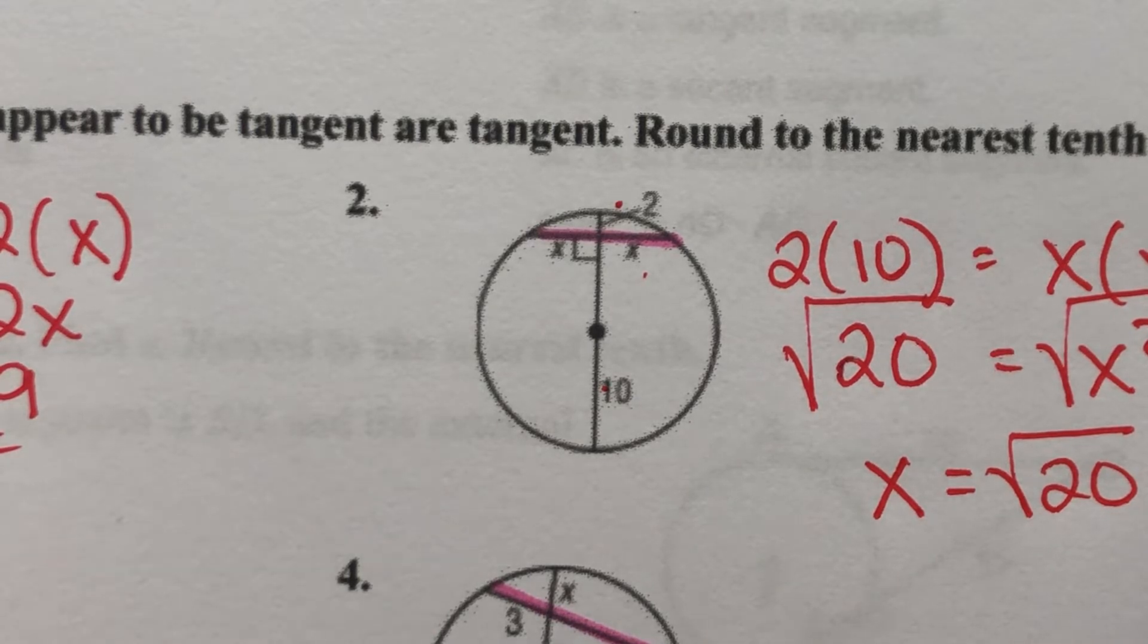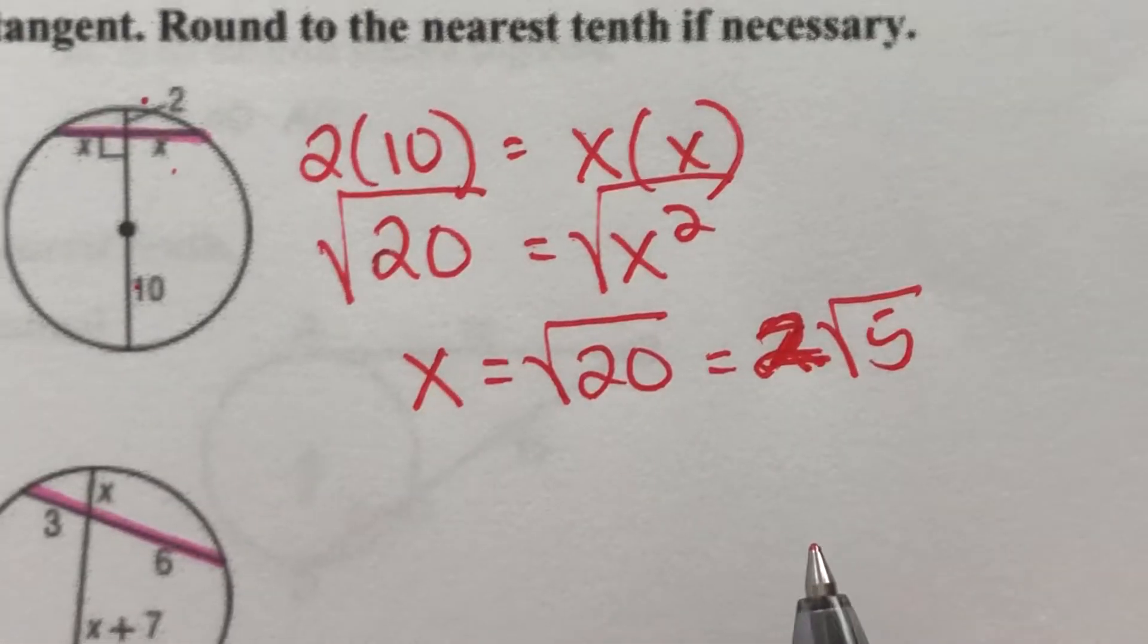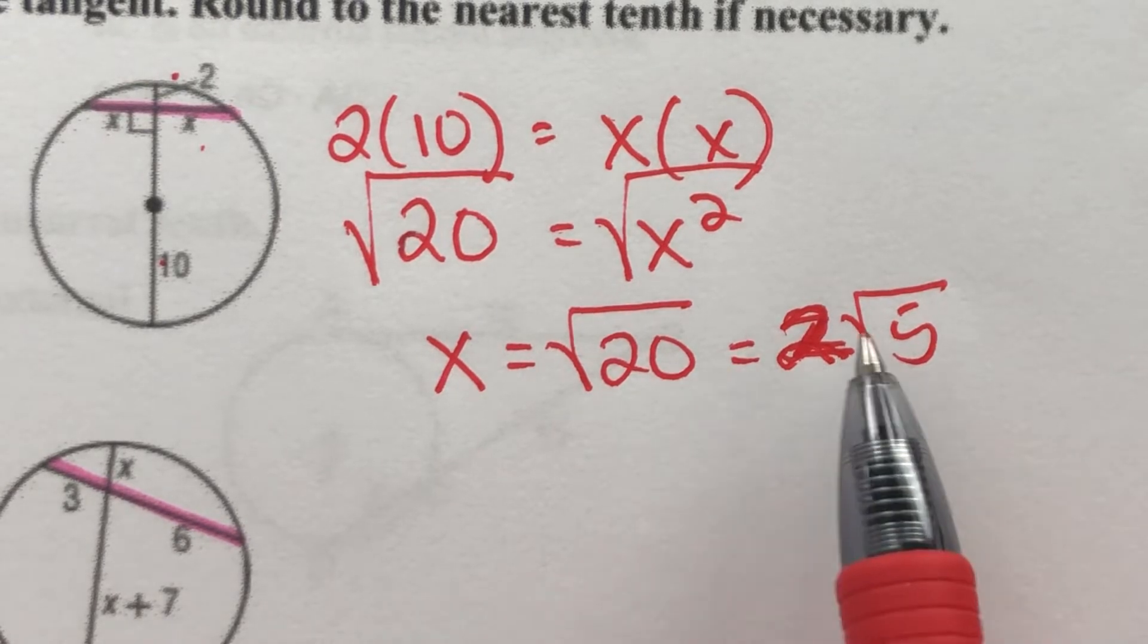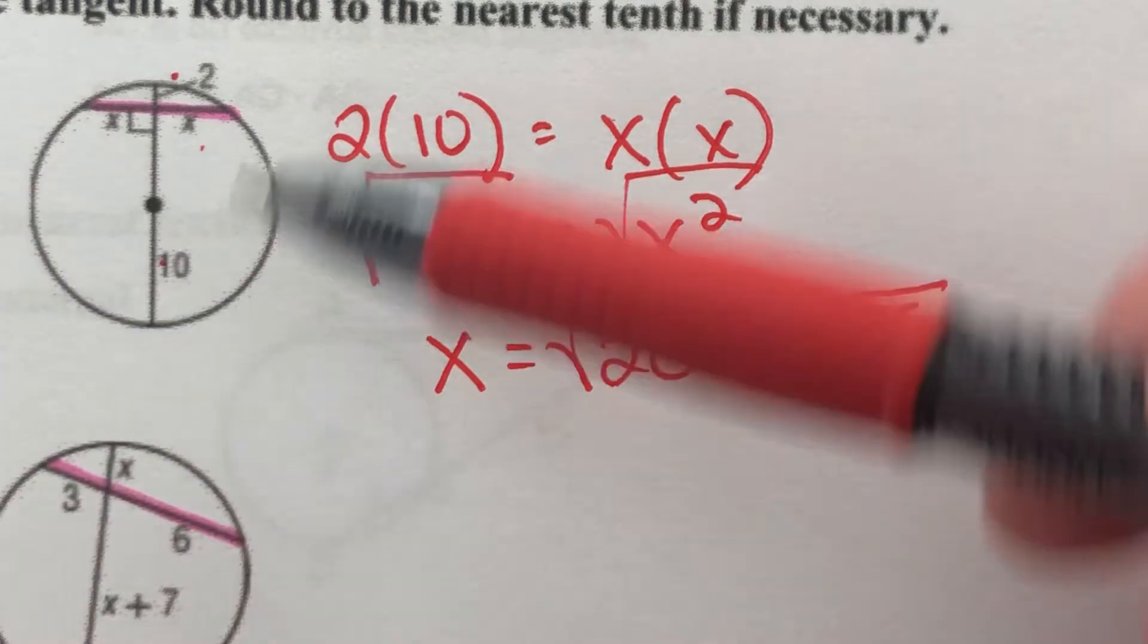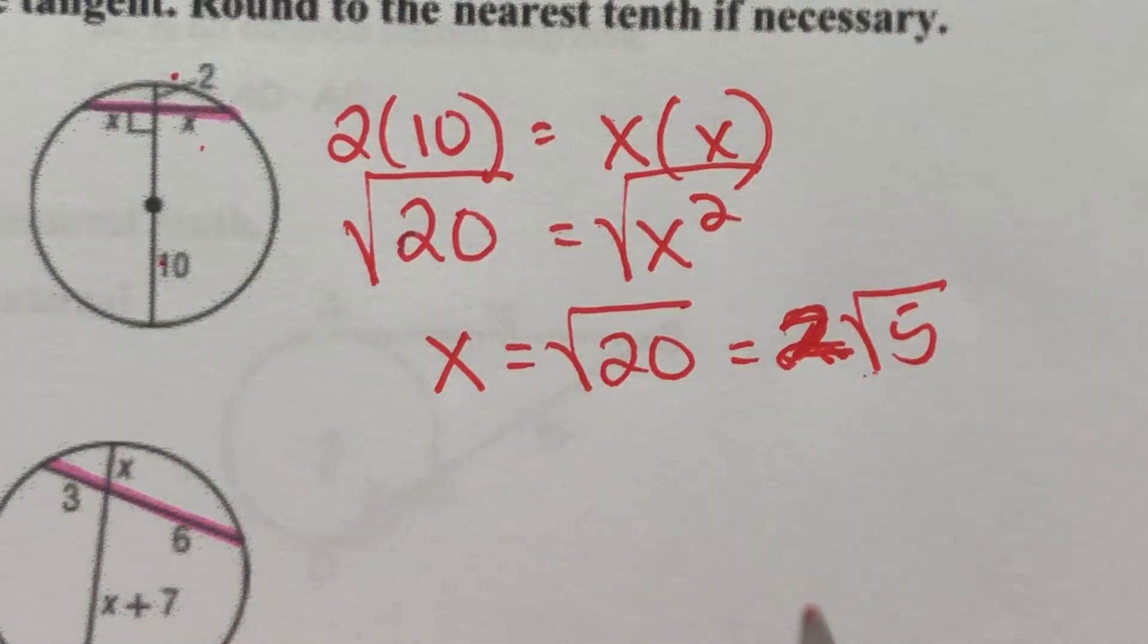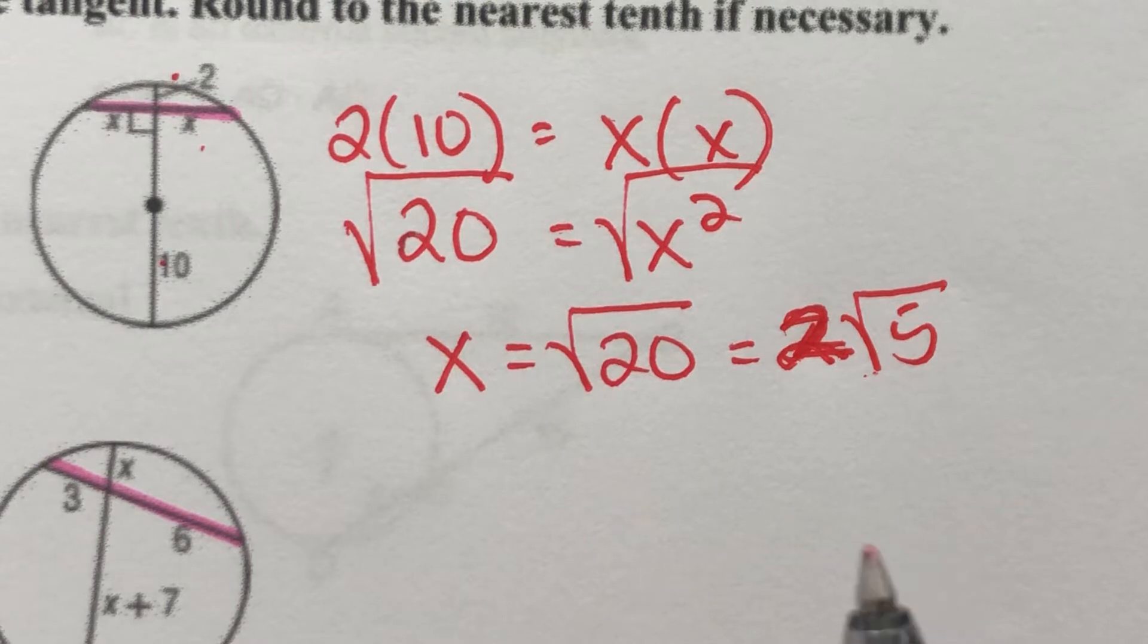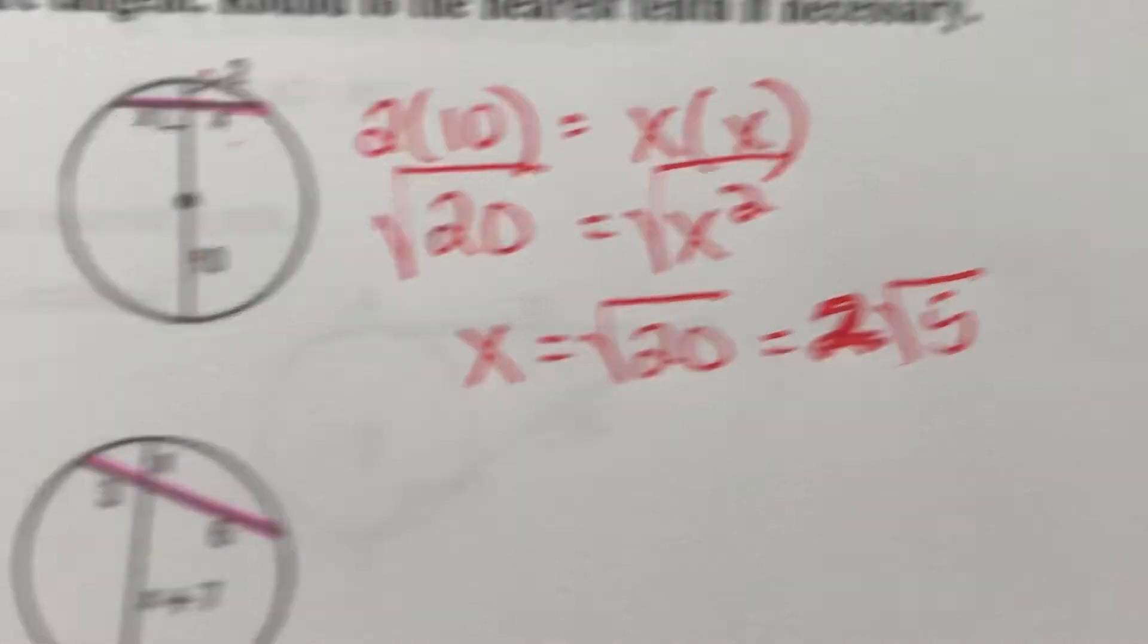We could also change it to a decimal, but then we would be rounding. And when you're talking about lengths and they're supposed to be equal, you don't want to round anything on one side if it's different from the other, right? So we want to keep it in the most accurate form, which is using the radical. All right, number three.